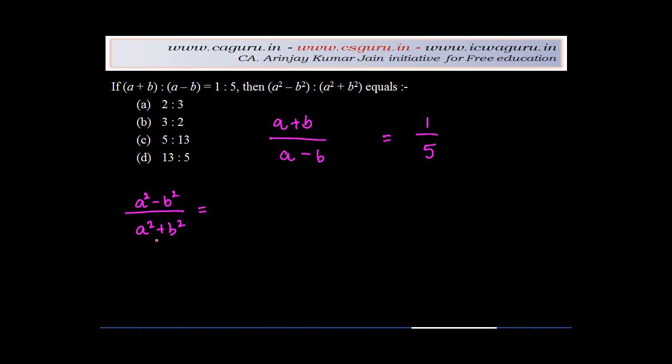Now the first obvious thing which might come to your mind is why not multiply (a+b) with (a-b), right? Because we know (a+b) times (a-b) equals (a²-b²).